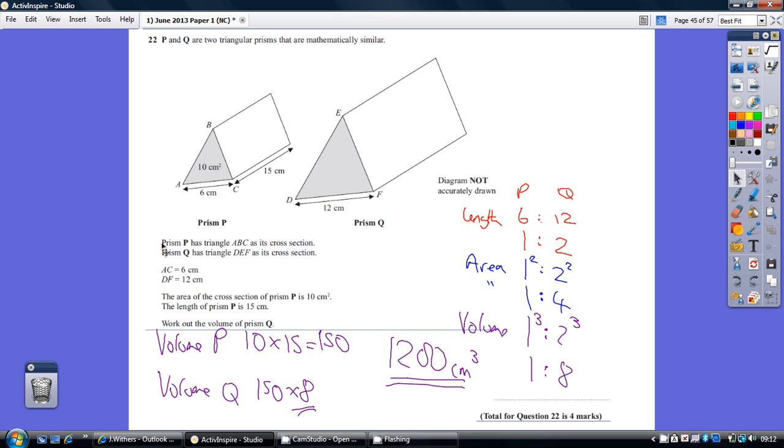Now the volume of P is the area of the cross-section, which is 10 times its depth, 10 times 15, which is 150. And therefore the volume of Q, given that the volume ratio is 1 to 8, is 150 times 8, which is 1,200.